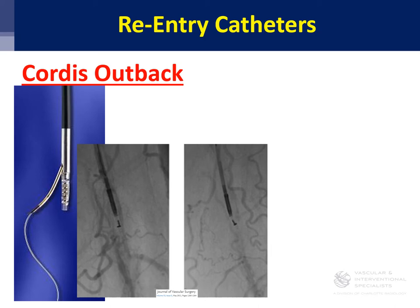Those are crossing devices. Sometimes you need other devices to cross, and occasionally you can cross but cannot re-enter, so you stay subintimal. In order to get back into the lumen, your options are certainly retrograde access, which is a very common and effective technique, or you can use a re-entry catheter. There are multiple different types. Here's one called the Outback — it has a needle attached to a catheter. You line it up to where the true lumen is and deploy the needle, fenestrating the subintimal plane to get into the true lumen, going from true lumen to subintimal back to true lumen.